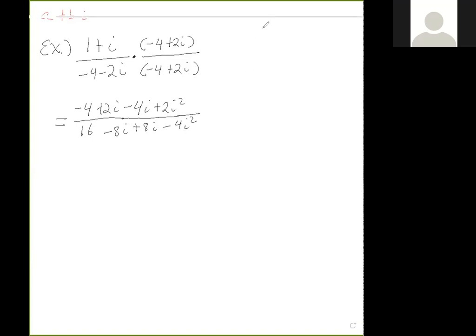Now remember, i² is -1. We have to remember that. That was introduced in our section. So with that information, this i² and this i² are both going to become -1. And then we can also simplify some terms.